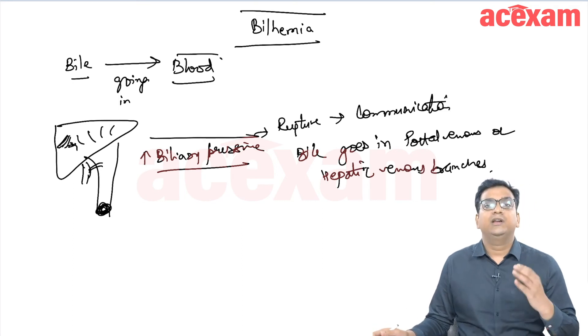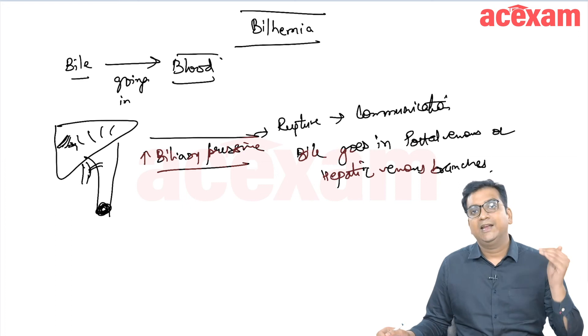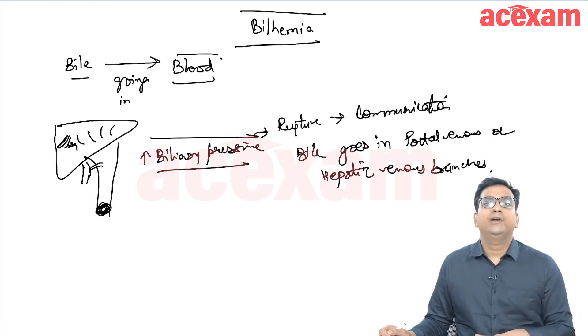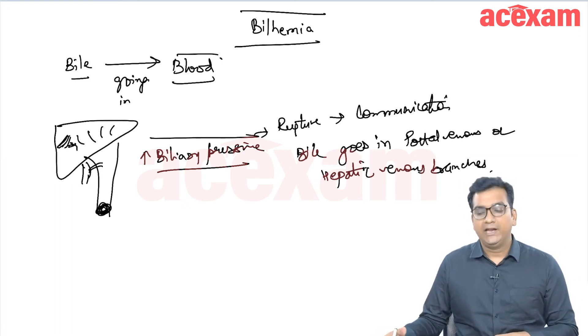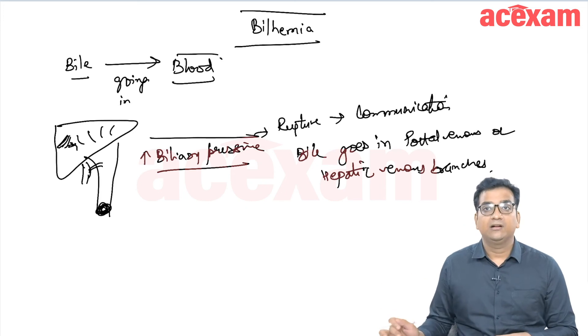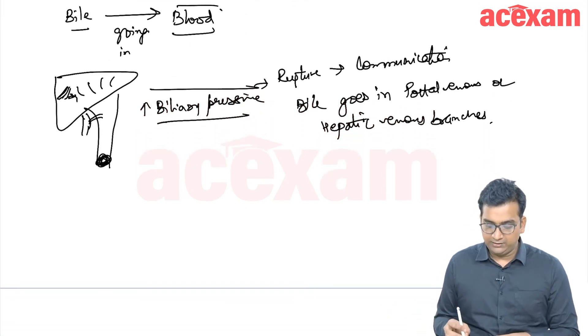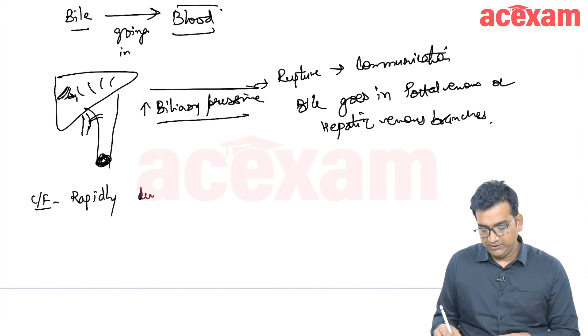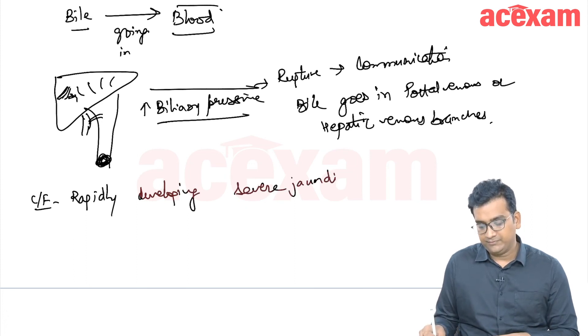Now what will happen is that the bile is going into the blood and there is rapid development of jaundice and patient is becoming very sick. So there is, in clinical features, there is a rapidly developing severe jaundice. Along with that, there is septicemia.